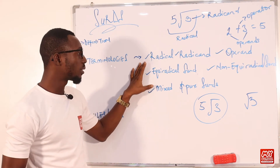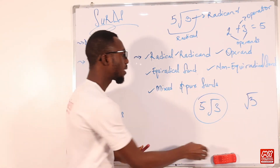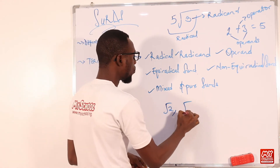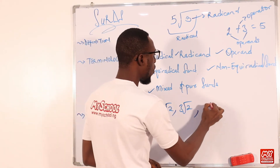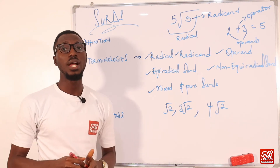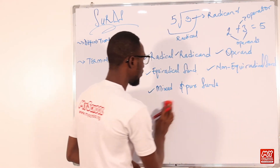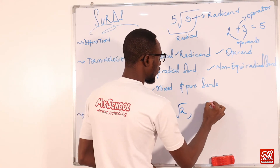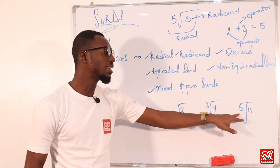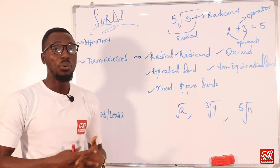When we say surds are equiradical, it means they have the same degree or index. For example, root two, three root two, and four root two all share the same index, so these are equiradical surds. When surds are non-equiradical, their degrees or indices are different. Those are the basic terminologies required when operating with the topic surds.